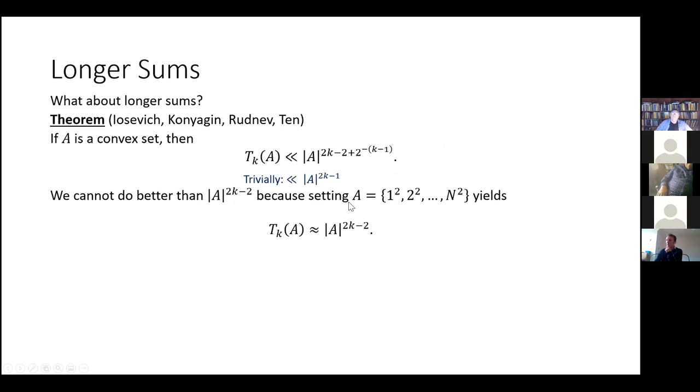But to think like this would be kind of erroneous because in fact, you can't do better than size of A to the power of 2K minus 2 as the upper bound. And this is because we've got this nasty set, A, which is the first n squares. And it actually yields the K-fold energy being roughly equal to size of A to the power of 2K minus 2. So what this means is that their result is actually pretty close to optimal. And as K increases, it becomes sharper and sharper.